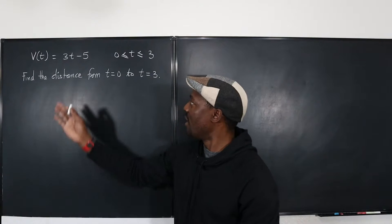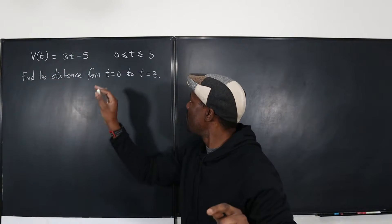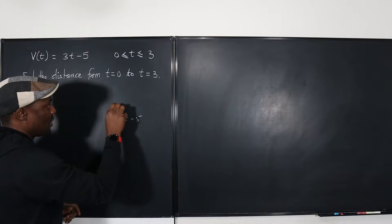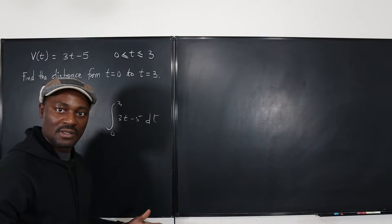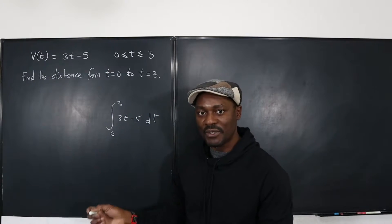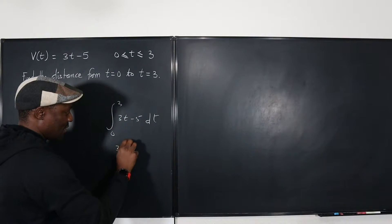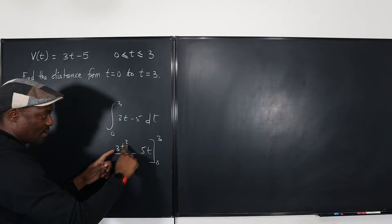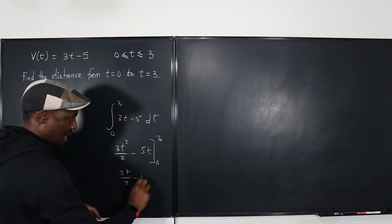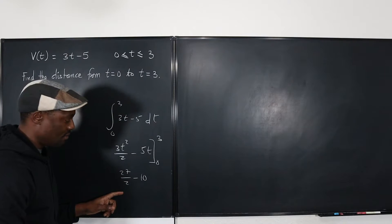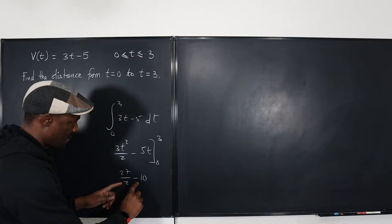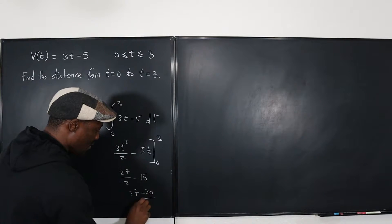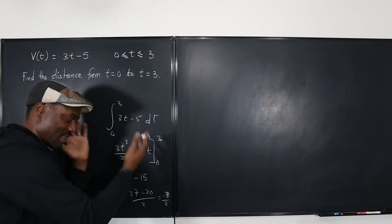Some people say: it's a velocity function and you're going from 0 to 3, just integrate. It's the integral of the velocity function, 3t minus 5, from 0 to 3 dt, and whatever you get will be the distance. But if you do this integral, you get 3t squared over 2 minus 5t, evaluated from 0 to 3. That gives 27 over 2 minus 15, which is 27 minus 30 over 2, that's negative 3 over 2. This also is not correct.